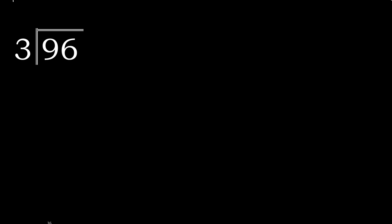96 divided by 3. First, 9. 9 is not less, therefore 3 multiplied by which number is nearest to 9 but not greater. 3 multiplied by 4 is 12, 12 is greater. 3 multiplied by 3 is 9.